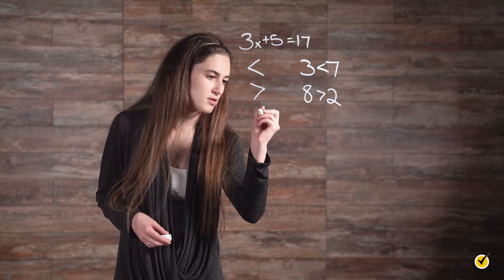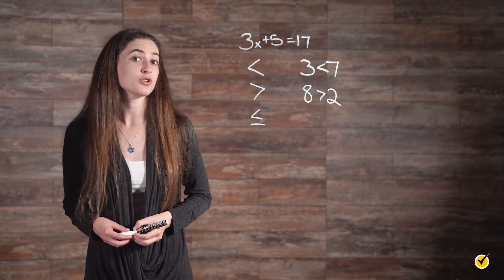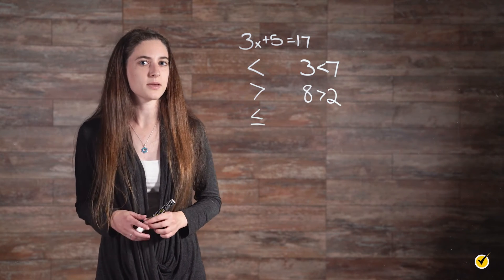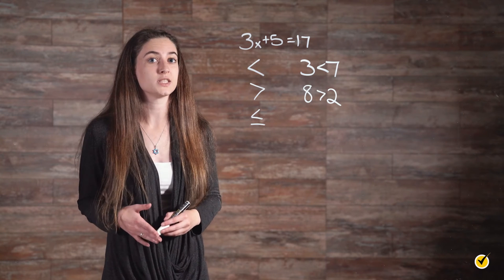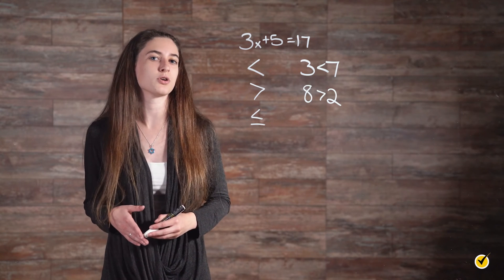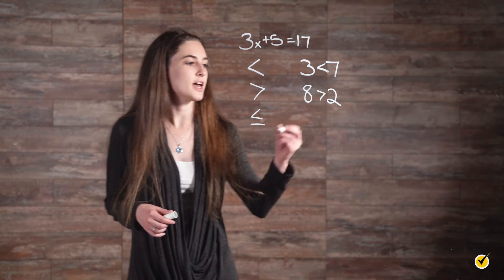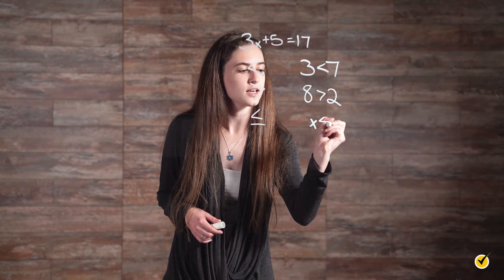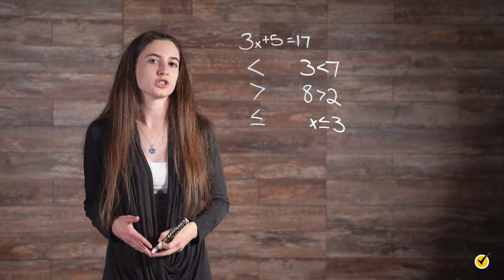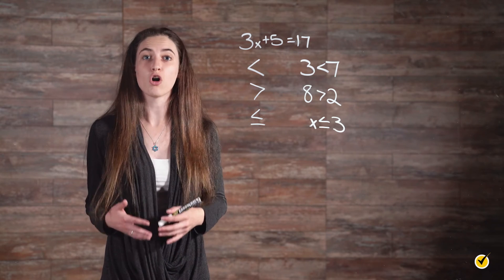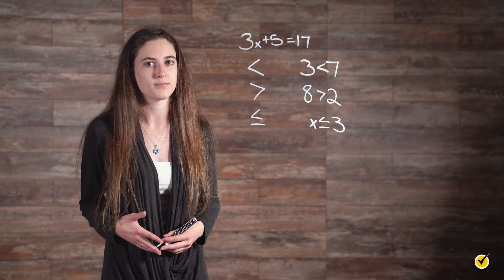This symbol means less than or equal to. It is almost the same as the less than sign, but also includes values equal to the number on the right side of the sign. For example, if we said x is less than or equal to 3, x would include values such as 1 and 2, and could also include 3 since 3 is equal to 3.